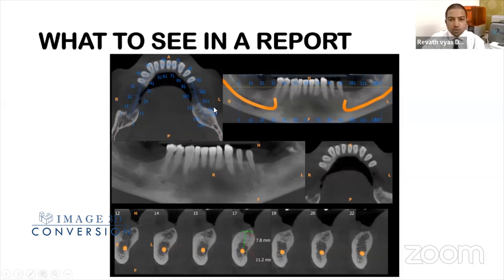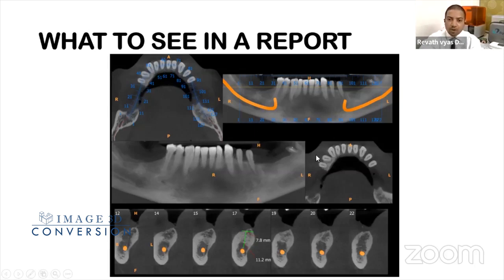You go through the numbering and corresponding trans-axial sections to see bone width and height. Most of the time nerve markings and maxillary sinus markings are also provided so that major amounts of data are transferred in reports.